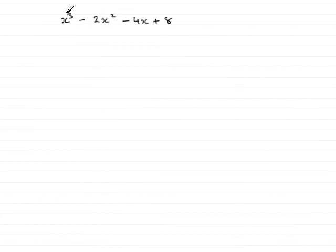In this question, we're given the expression x cubed minus 2x squared minus 4x plus 8 and asked to find the remainder when this is divided by x minus 3 and x plus 2.